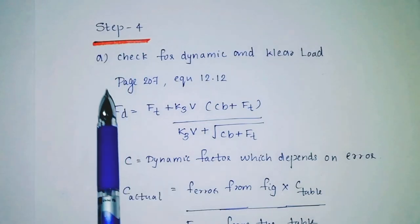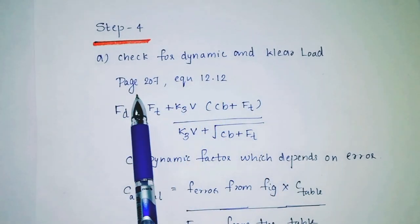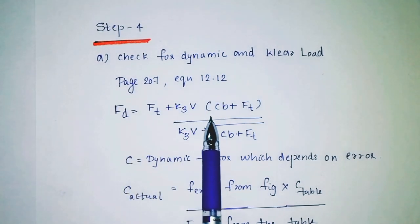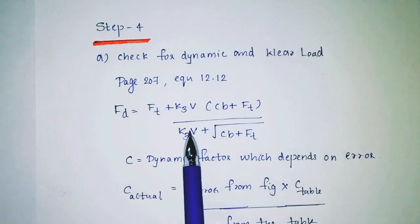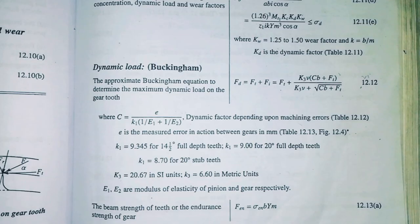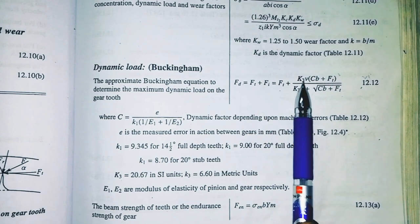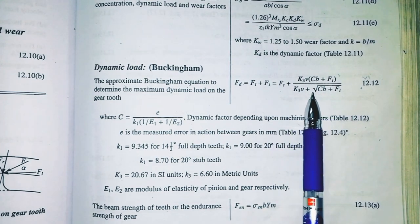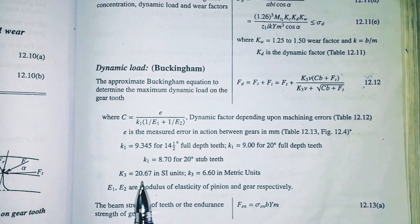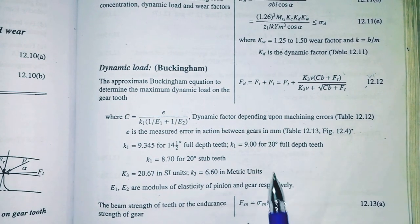Step 4: Check for dynamic and wear load. Dynamic load equation from page number 27, equation 12.12: Fd equals Ft plus k3v into cb plus Ft divided by k3v plus square root cb plus Ft. For k3, the value is 20.67 in SI unit or 6.60 in metric units.